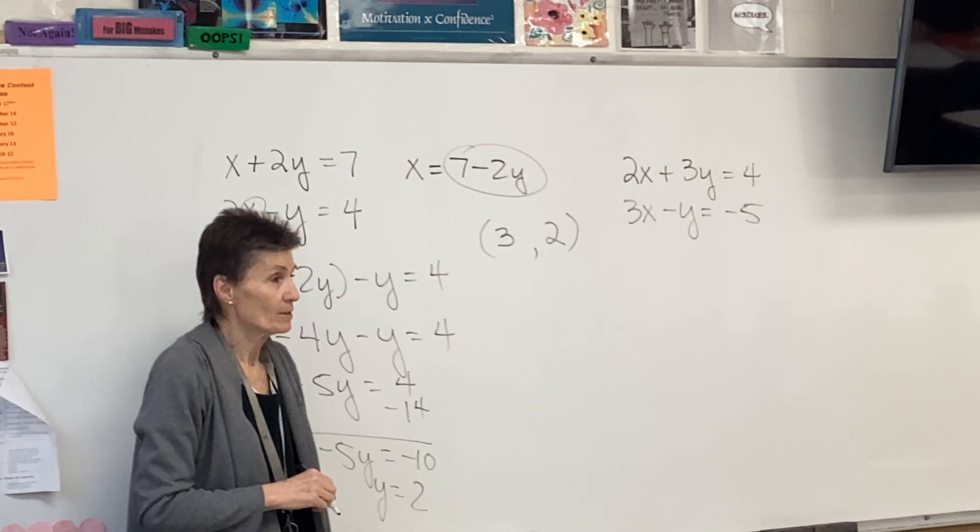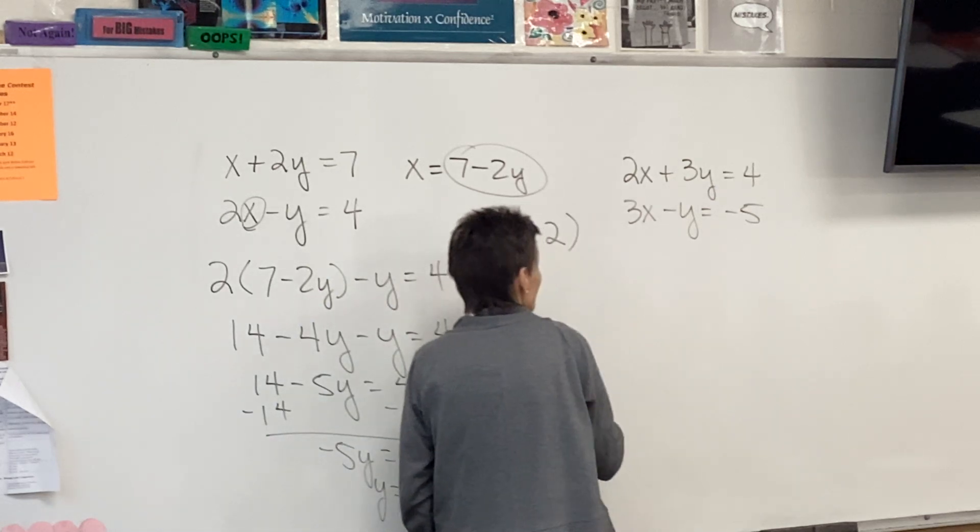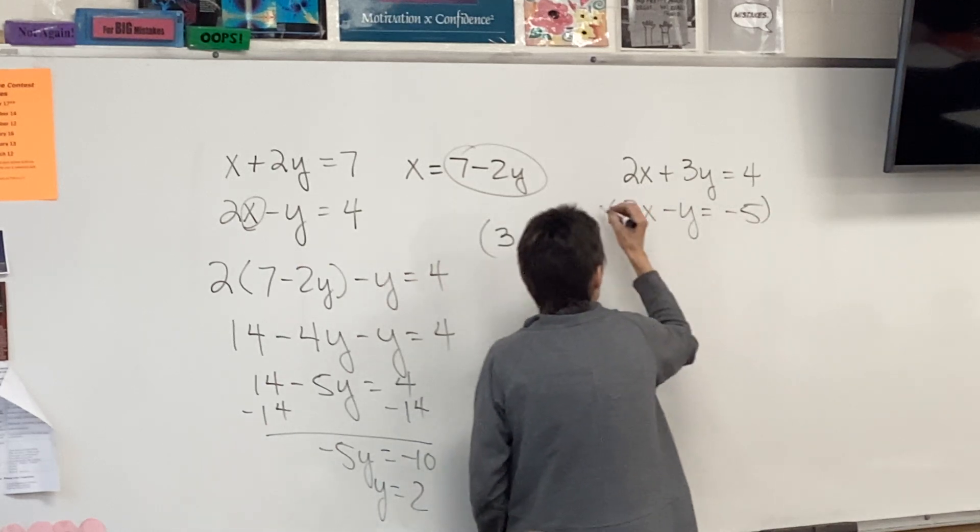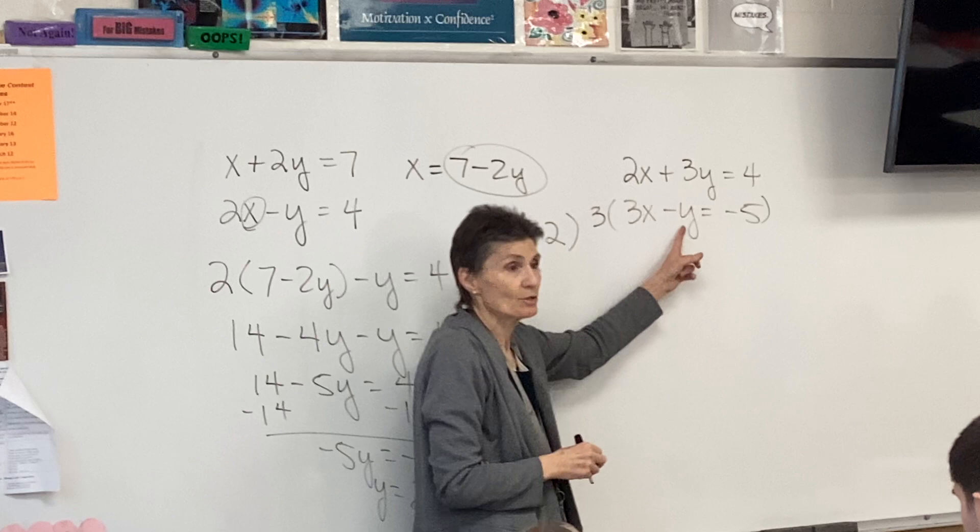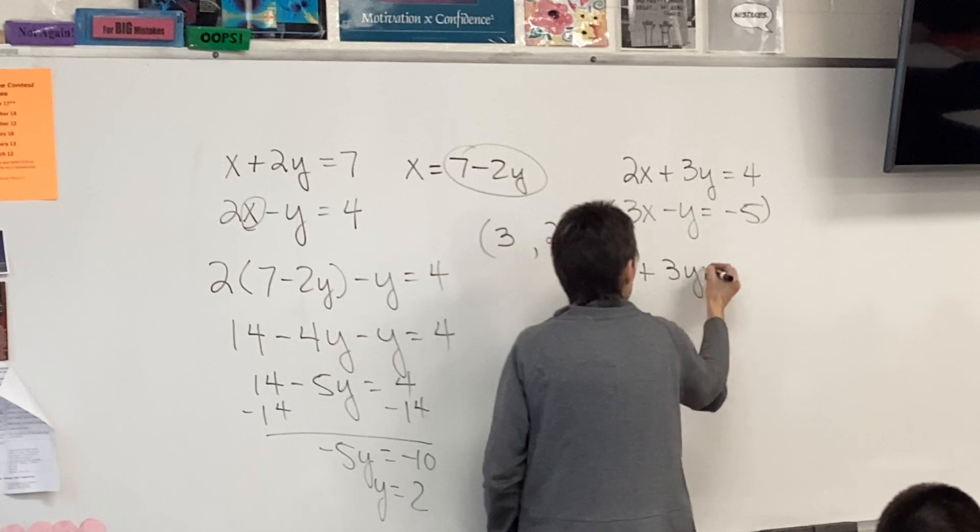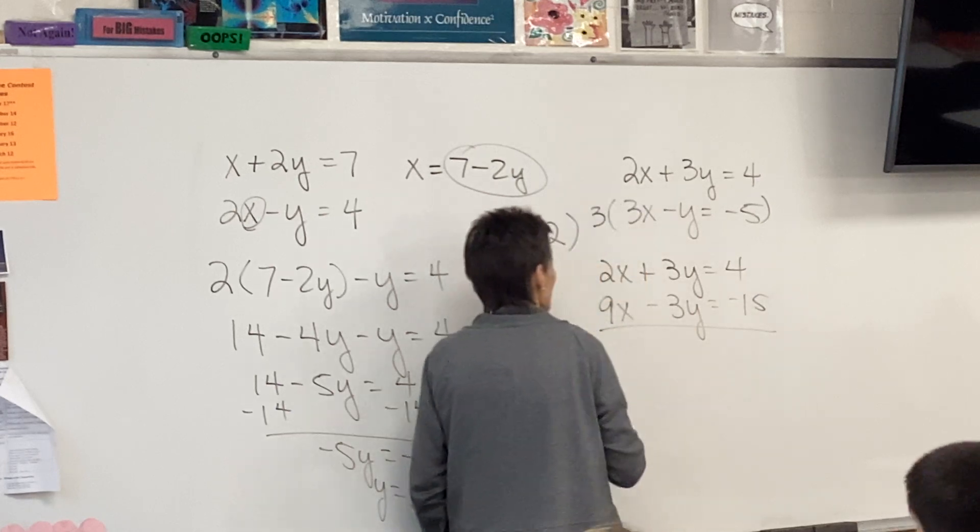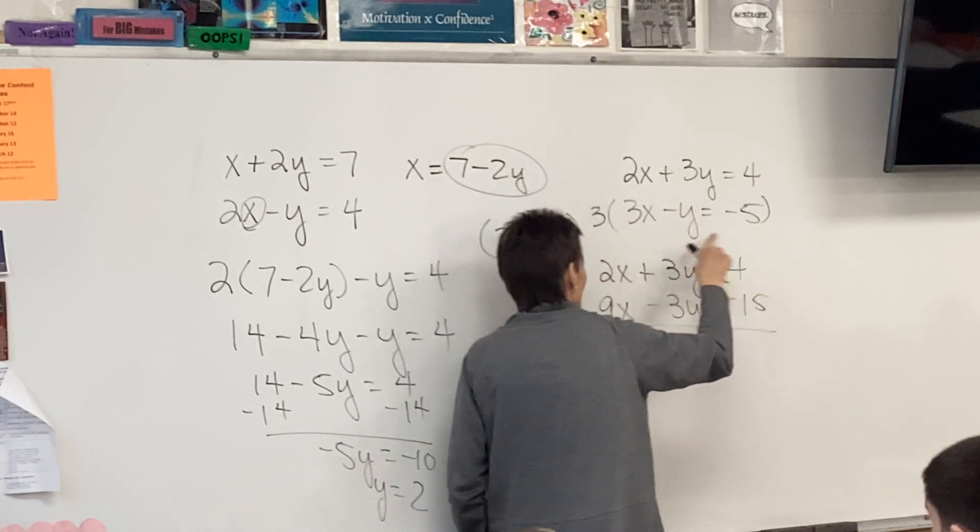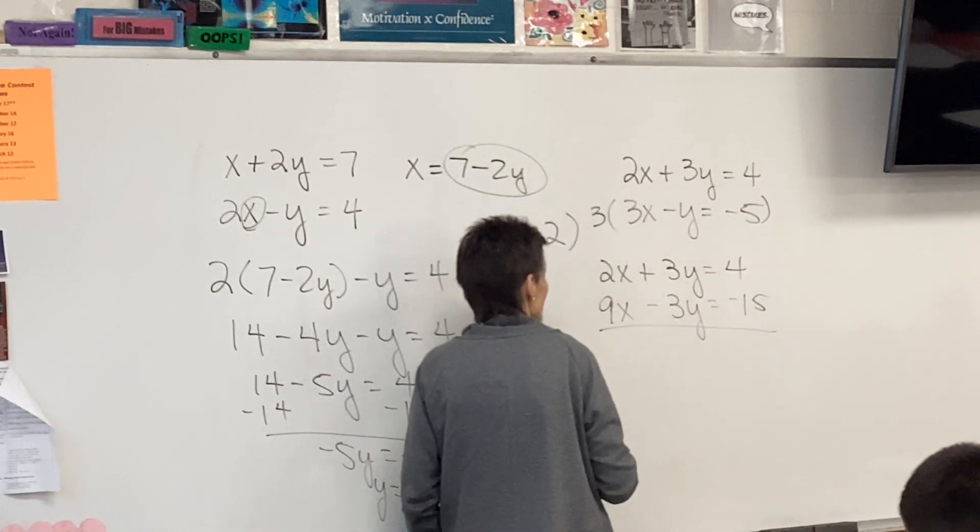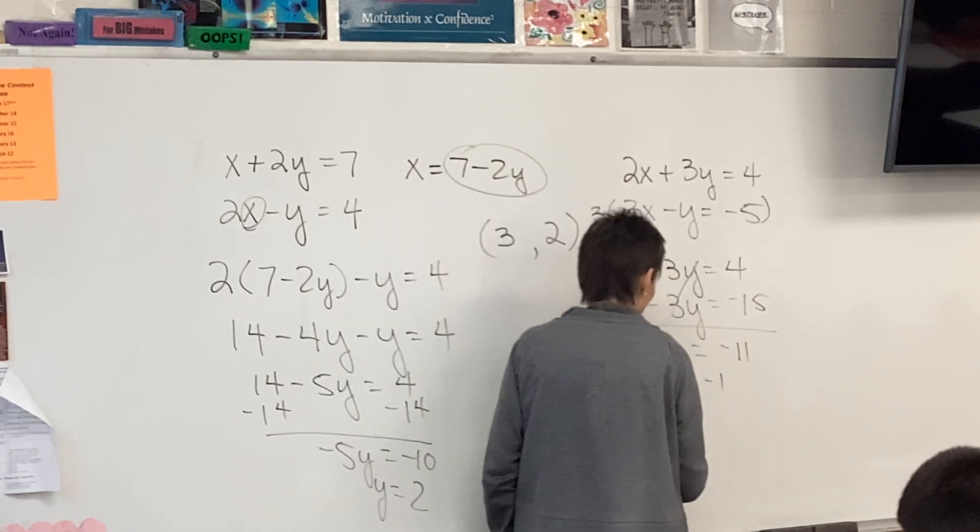How do I do this? Well, multiply by something to make something cancel out. So I might multiply this bottom row by 3 because that will turn that into a negative 3y. Okay, so 2x plus 3y equals 4, 9x minus 3y equals negative 15. Make sure that when you're multiplying through by whatever you decide to multiply by, that you're multiplying everything in the whole equation.